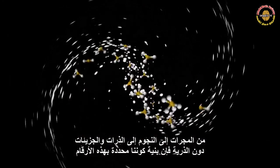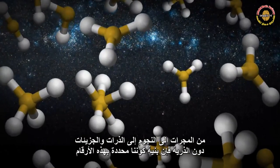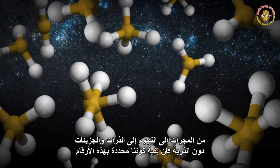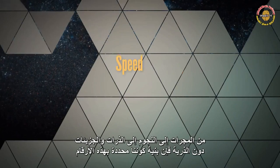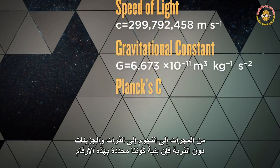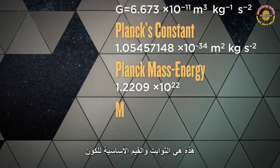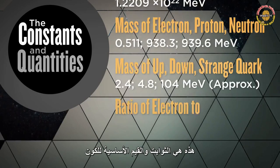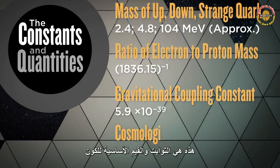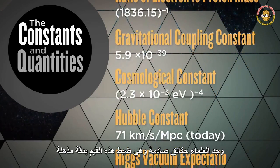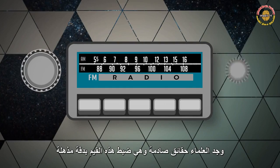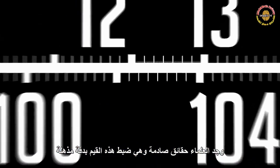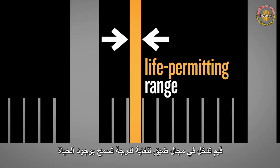From galaxies and stars down to atoms and subatomic particles, the very structure of our universe is determined by these numbers. These are the fundamental constants and quantities of the universe. Scientists have come to the shocking realization that each of these numbers has been carefully dialed to an astonishingly precise value, a value that falls within an exceedingly narrow life-permitting range.